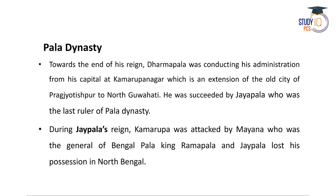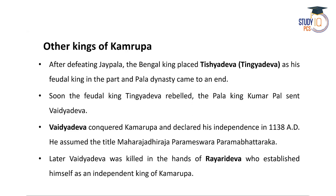Towards the end of his reign, Dharmapal conducted his administration from the capital at Kamrupnagar, an extension of the old city of Kamrup toward North Guwahati. Dharmapal was succeeded by Joypal, the last ruler of the Pal dynasty. During Joypal's reign, Kamrup was attacked by Mayana, the general of Bengal Pal king Rampal. After this defeat, Joypal lost his position in North Bengal, and the Bengal king placed Tishadeva or Tingadeva as feudal king in Kamrup, ending the Pal dynasty.